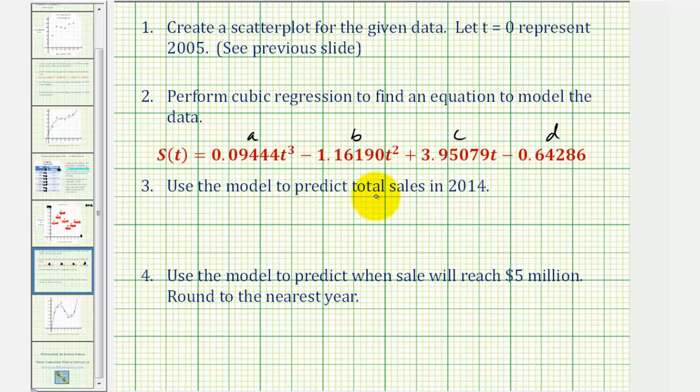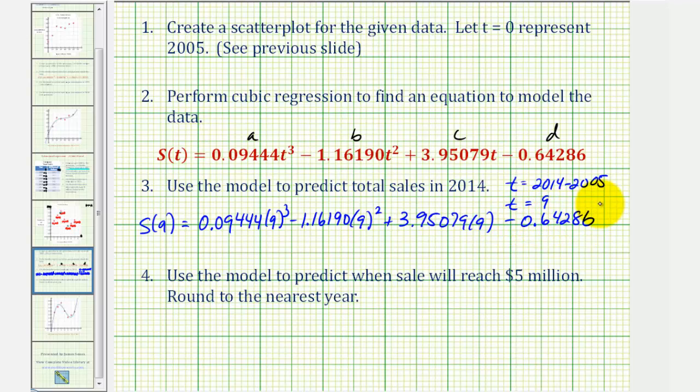So for number three, we want to use this model to predict the total sales in 2014. But remember, we don't want to use this value for t, because t is the number of years after 2005. So we're actually going to use t equals 2014 minus the base year. So we're going to use t equals nine. So to determine s of nine, we'll substitute nine for t. Instead of doing this by hand, since we already have the equation stored in y one, we can easily use the calculator to determine this function value. So let's go ahead and do that.